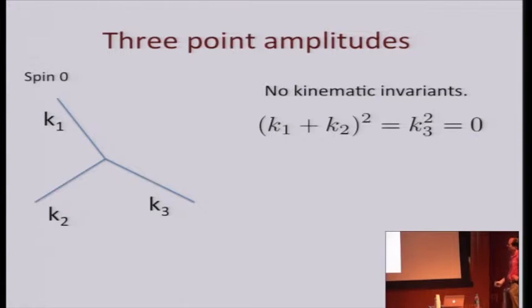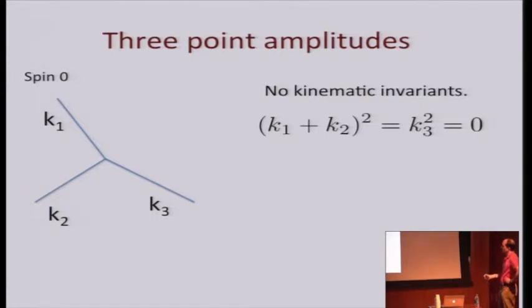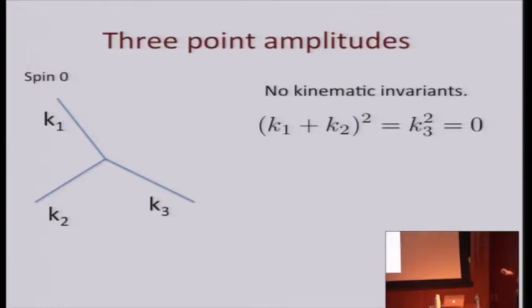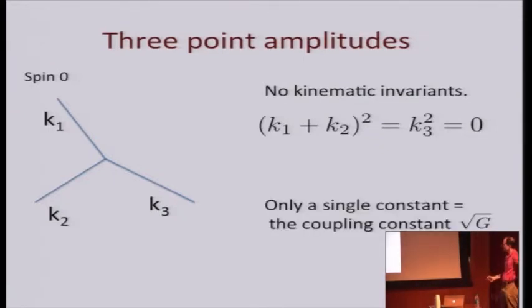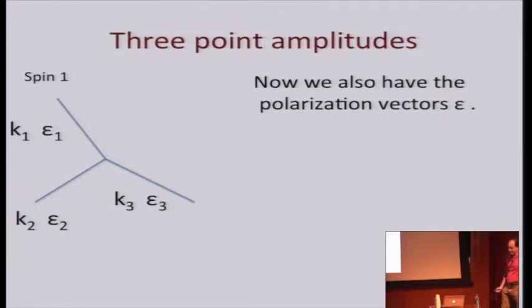Let's consider three-point scattering amplitudes with three on-shell particles interacting at a vertex. For particles of spin zero, these amplitudes cannot depend on any non-trivial kinematic invariant, because all the K_i obey the mass-shell conditions with squares equal to zero for massless particles. Taking something like K1 plus K2 equals K3 squared, which also equals zero by momentum conservation — so we cannot have any non-trivial invariant, and we have a single coupling constant.